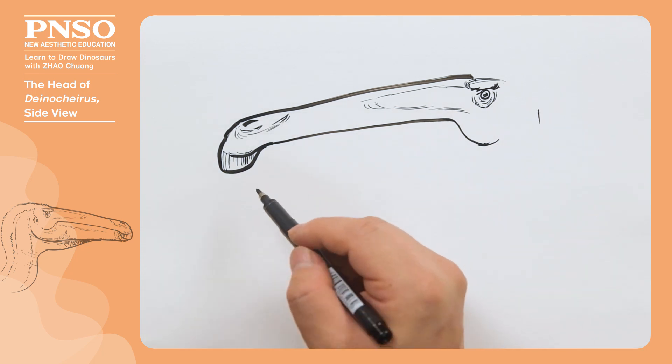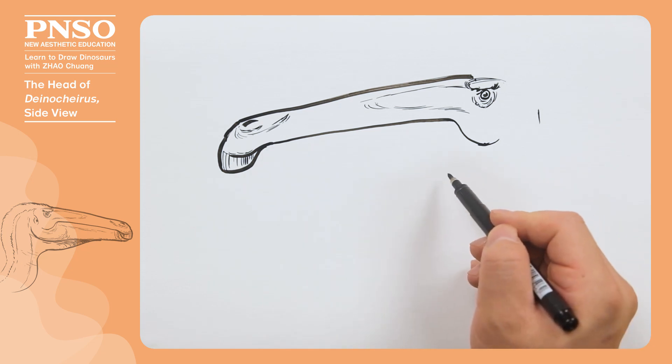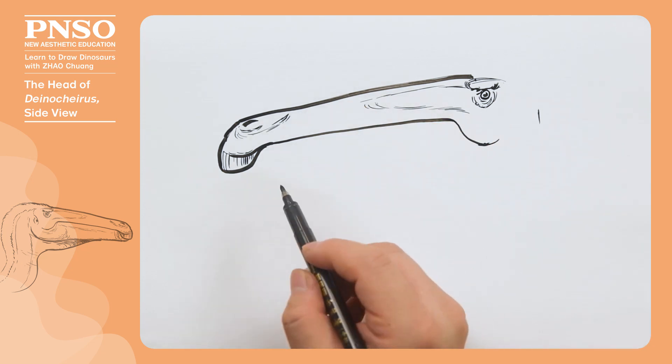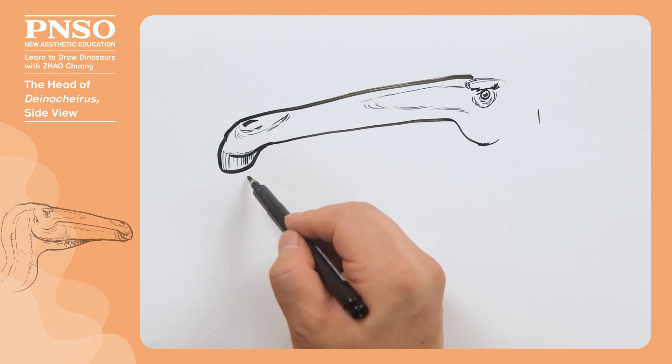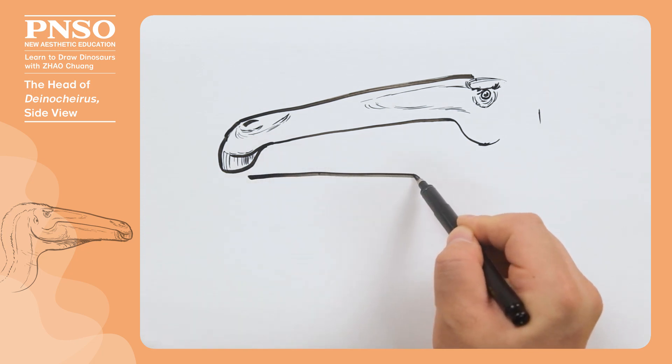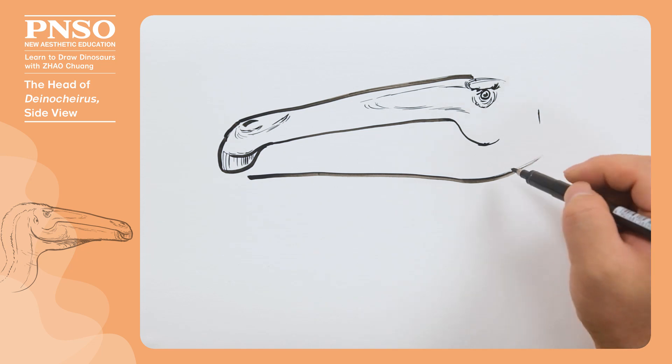Deinocheirus had a very special lower jaw, very thick, even thicker than its upper jaw. From here to the rear, about here, it was thicker than the upper jaw.